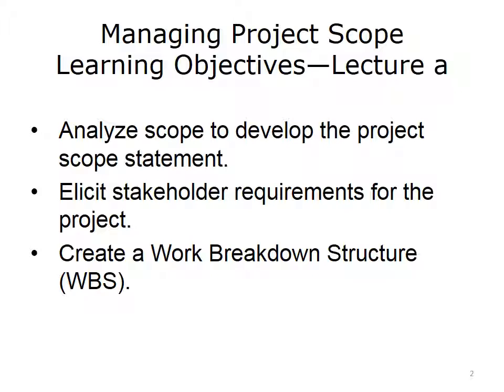The first objective is to analyze scope to develop the project scope statement. We will look at methods to analyze scope and come up with the scope statement. Next, we will talk about eliciting stakeholder requirements for the project and look at the close tie between scope and requirements. We will also create a work breakdown structure. This unit talks about two actual products: the project scope statement and the work breakdown structure.